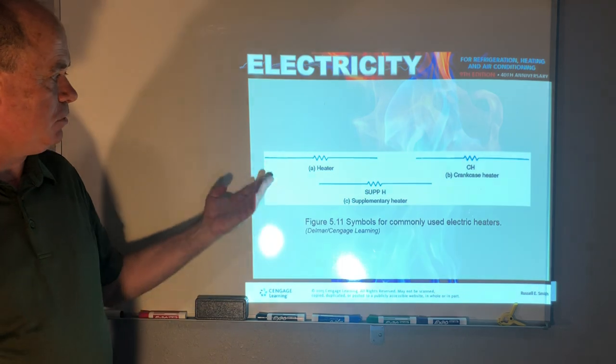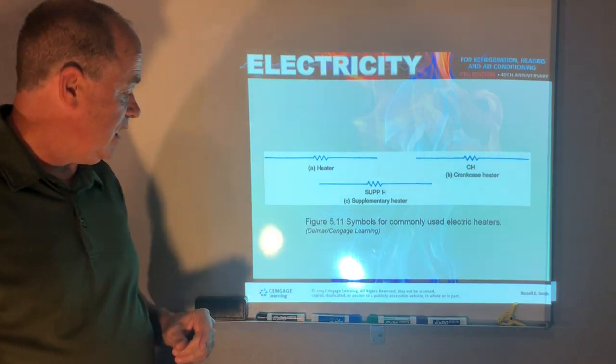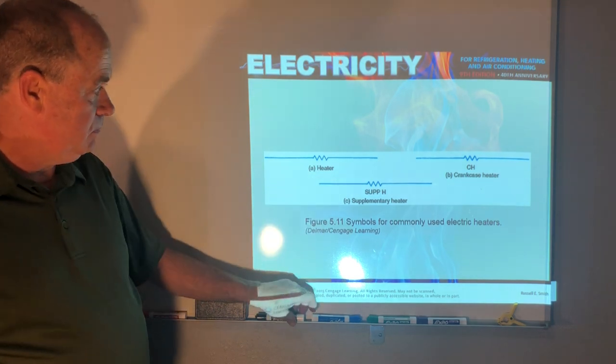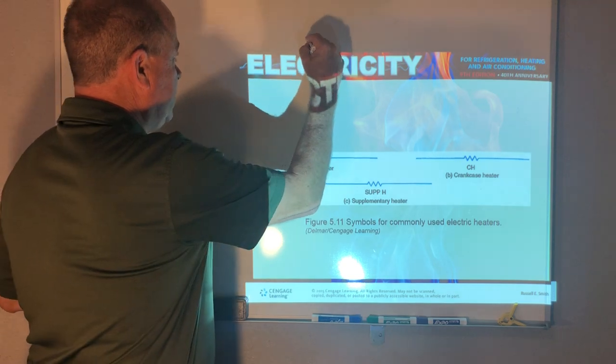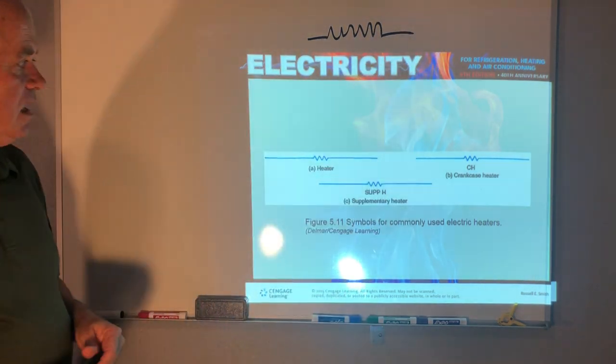And here's just a simple symbol for a heater, a squiggly line, as you can see. And let's just draw it a little bigger here so you might be able to see better. So that's how we would draw a heater.